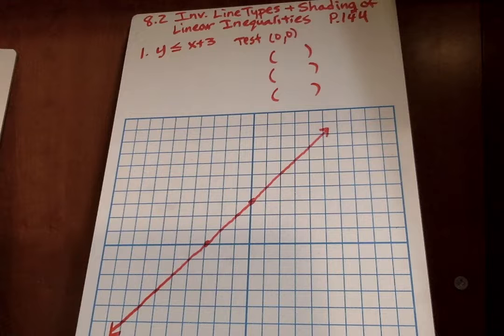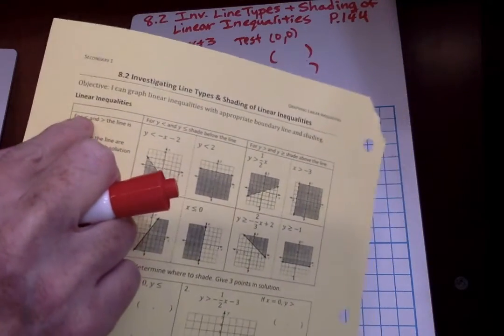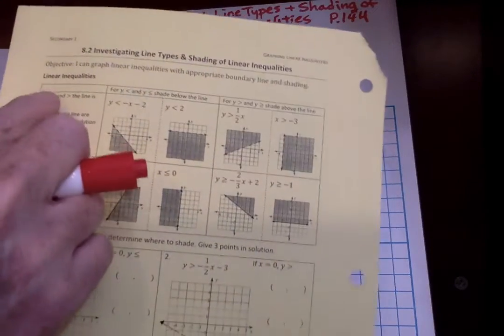The first part goes over if it's greater than or less than, the line is dashed. See right here it's the same as a number line where you're like, oh this takes less ink, dotted lines take less ink. So that's how you can remember that right there.